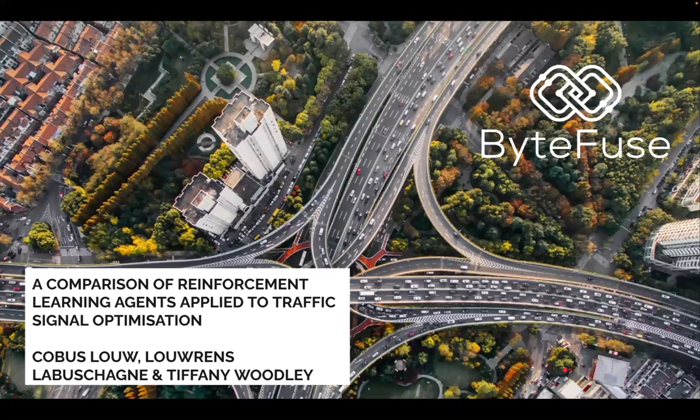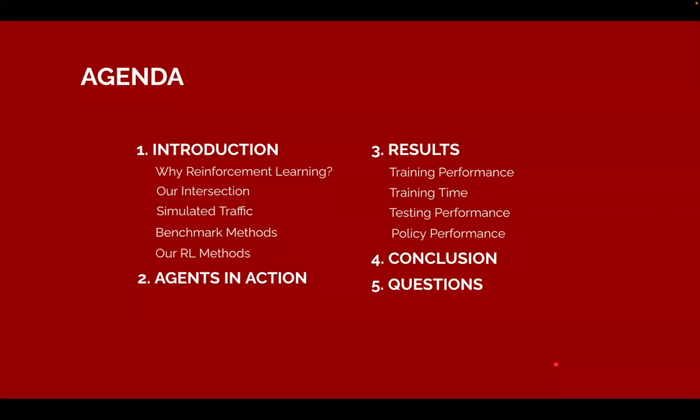One of the problems we've been working on is traffic signal optimization, which led us to this paper: a comparison of reinforcement learning agents applied to traffic signal optimization. We want to go through the motivation, our problem setup and approach, then take a deeper dive into the policies our agents came up with through some interesting visualizations, and conclude with what these results mean.